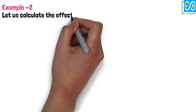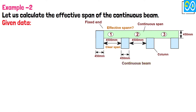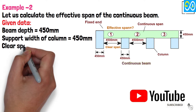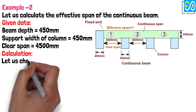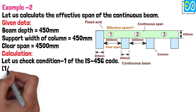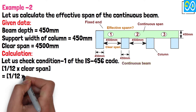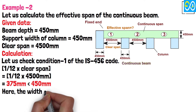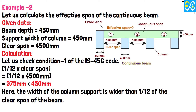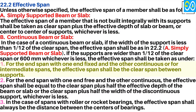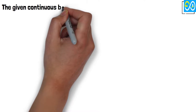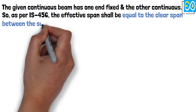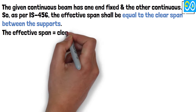Example 2: Let us calculate the effective span of the continuous beam. Given data: beam depth = 450 mm, support width of column = 450 mm, clear span = 4,500 mm. Checking condition 1 of IS 456: 1/12 × 4,500 mm = 375 mm, which is less than 450 mm. The width of the column support is wider than 1/12th of the clear span. The given continuous beam has one end fixed and the other continuous, so as per IS 456, the effective span equals the clear span between supports = 4,500 mm.